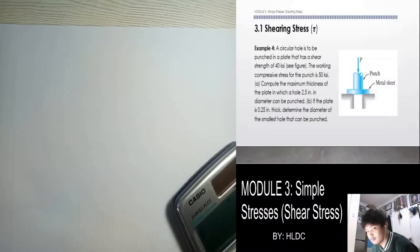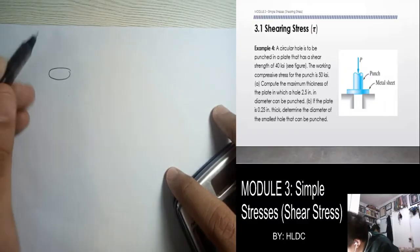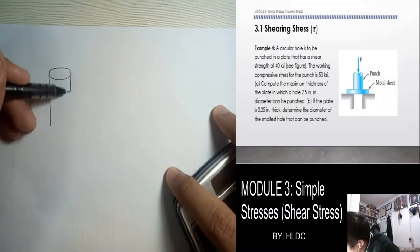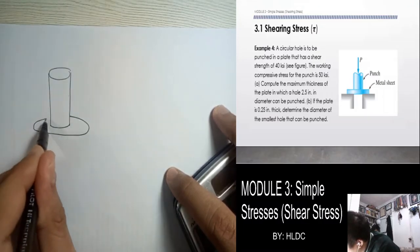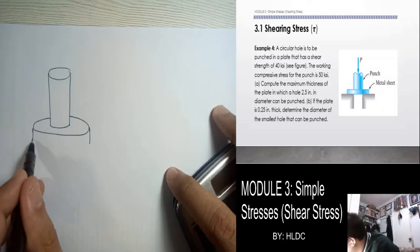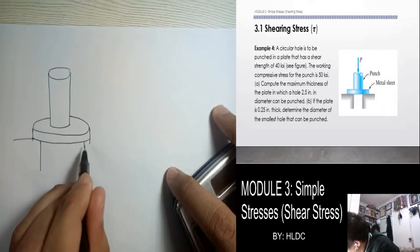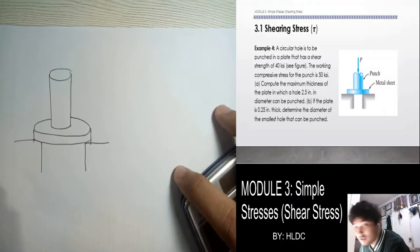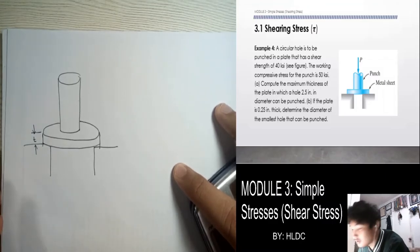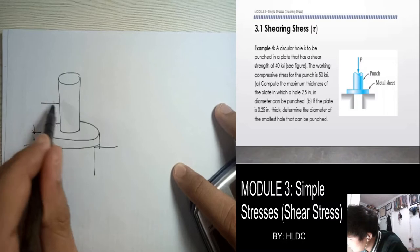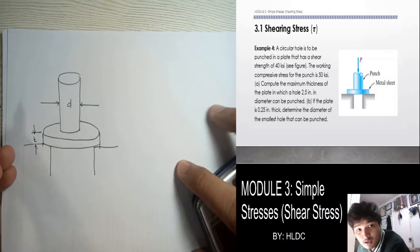So let's first draw the figure. This is the punch, and down here is the plate. This is the thickness T of the plate, and this is the diameter of the punch. We are given the allowable stresses.